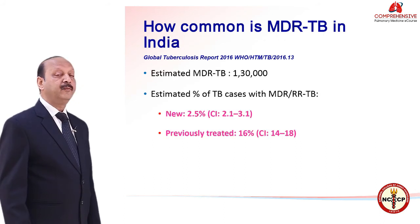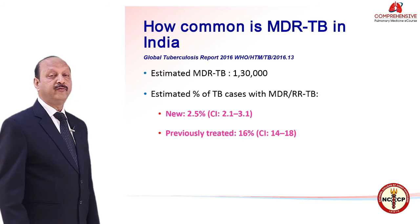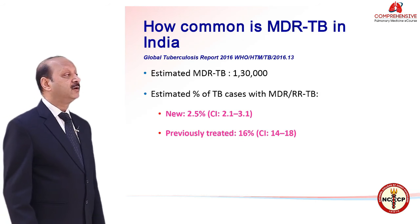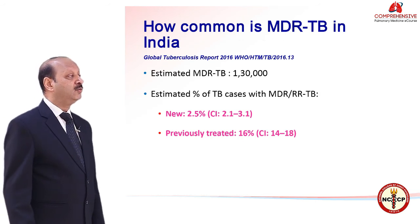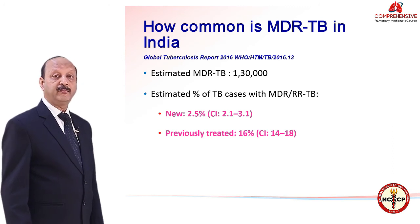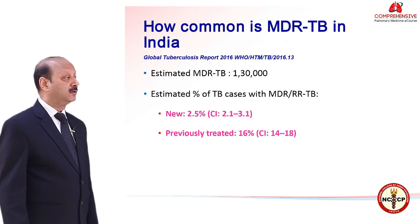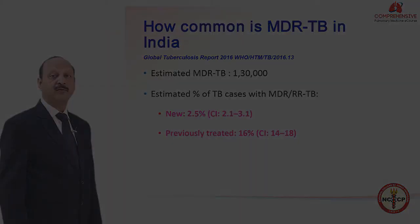Coming to India, in 2015 there were an estimated 1.3 lakh cases of MDR tuberculosis. Importantly, among new cases of tuberculosis, 2.5 percent are MDR tuberculosis — that is, if there are 100 cases of tuberculosis, 2.5 percent of them will be MDR. Among previously treated cases of tuberculosis, the proportion is significantly higher.